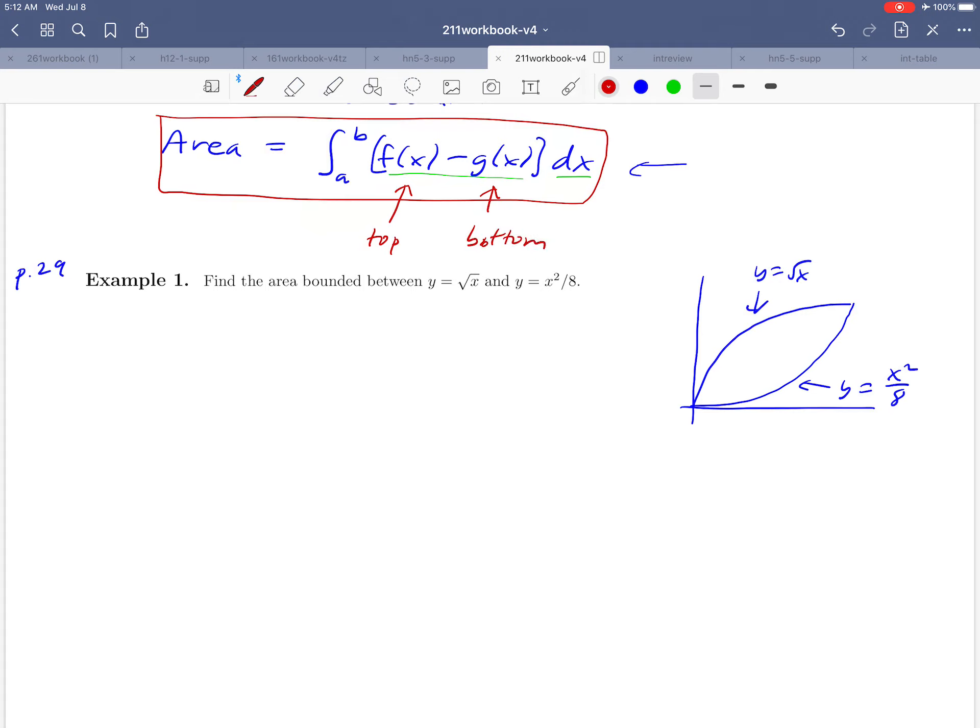So in a problem like this, when you're finding area, you're going to go in that order, right? So kind of using that idea, the area that we're looking for should look like the integral of the curve that's on the top, that's going to be the square root of x in our case, minus the curve on the bottom x squared over 8.